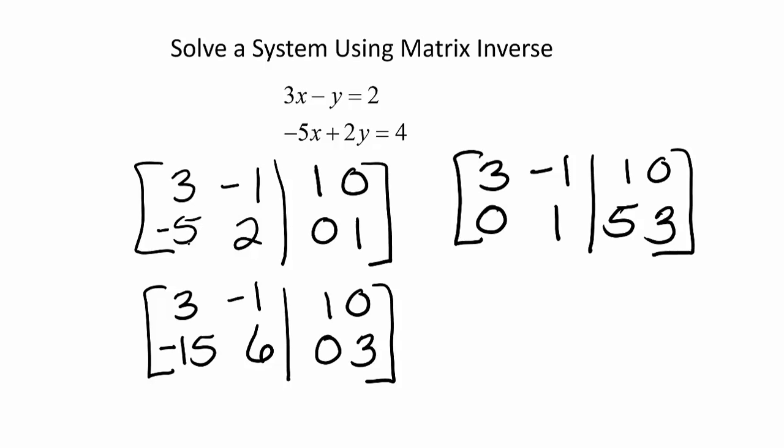Now we're going to add the first and second rows to get a new first row. Notice that our second row stays exactly the same. 3 plus 0 is 3. Negative 1 plus 1 is 0. 1 plus 5 is 6. 0 plus 3 is 3.